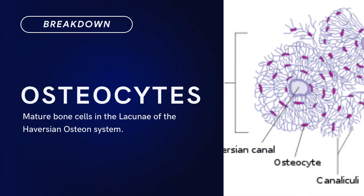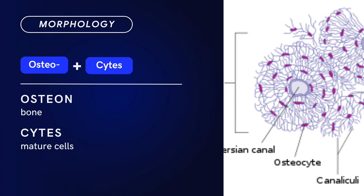Compound Term: Osteocytes. Brief Definition: Mature bone cells in the lacunae of the Haversian Osteon System. Term Morphology — osteocytes is a compound of osteon, meaning bone, and cytes, meaning cells. There you have it: osteocytes.